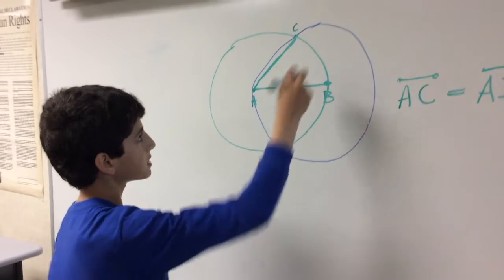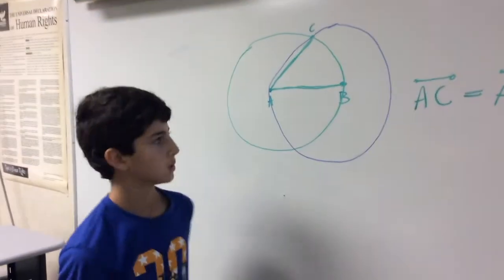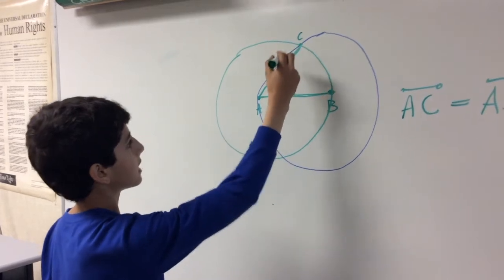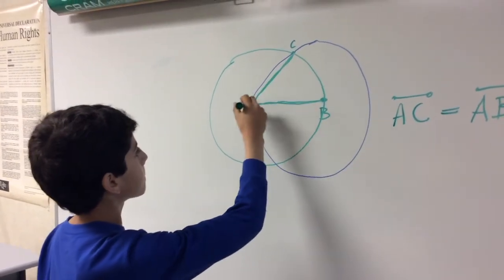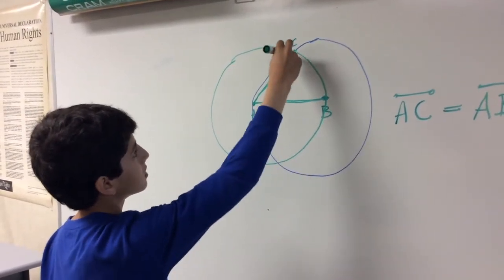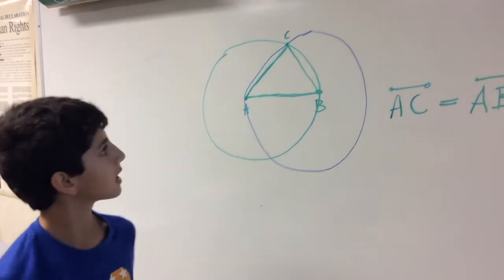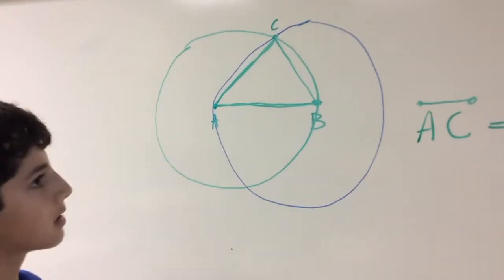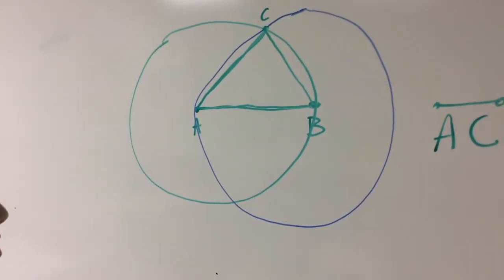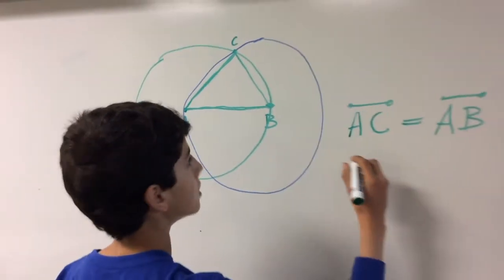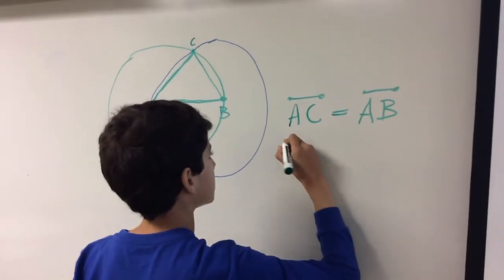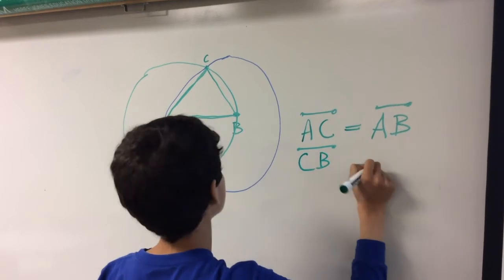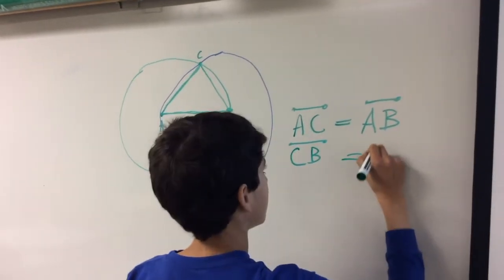And now, let's take a look at the blue circle. We see that we have line segment AB and we have line segment CB. Let's make a new one here. And we see that both of those are the radius of the blue circle. And the radius, as I said, they're always the same. And so, we get that line segment CB equals line segment AB.